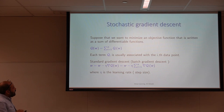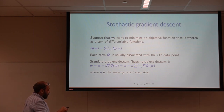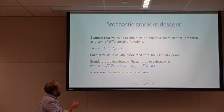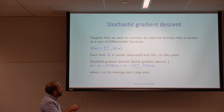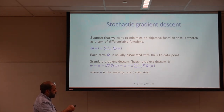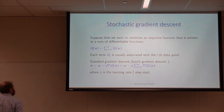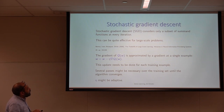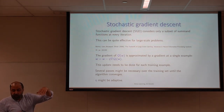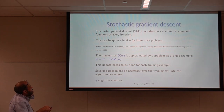The idea of gradient descent is that for updating any weight we have the previous weight minus some learning rate times the gradient of the cost function, which is in the form of a summation. The idea of stochastic gradient descent is that instead of working with the gradient of q, you work with the gradient of qi.